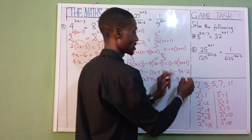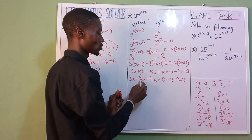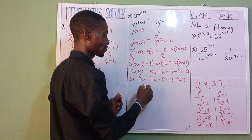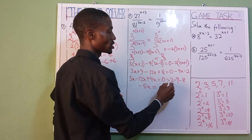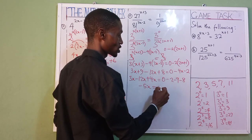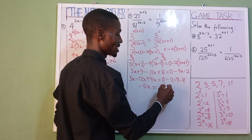Let's now collect our like terms. We have 3x minus 12x. Let's bring this one here, plus 4x, equals minus 2. Bring plus 9 and plus 8, bring it here as minus 8. 3 minus 12, that is minus 9, plus 4, that is minus 5x equals minus 2 minus 9, that is minus 18.